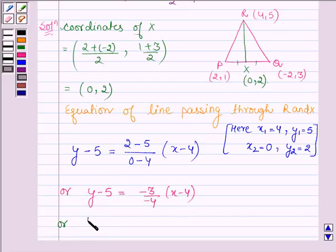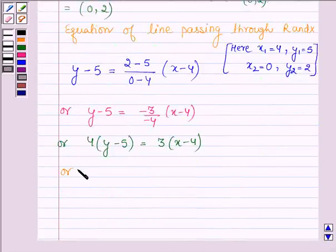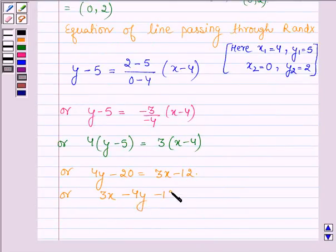Or 4(y - 5) = 3(x - 4), which gives us 4y - 20 = 3x - 12, or 3x - 4y - 12 + 20 = 0.